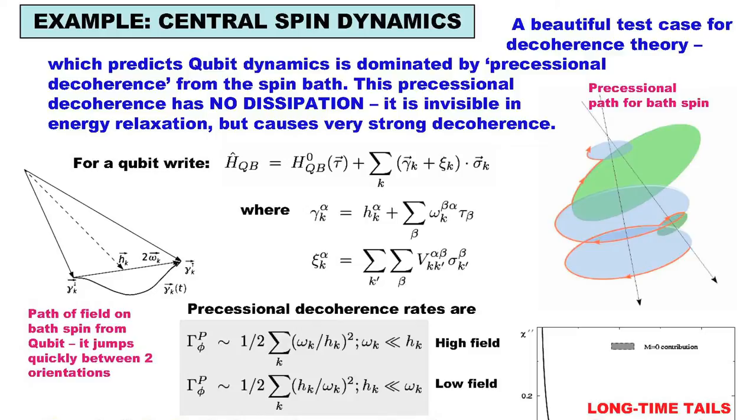Let's imagine we're looking at one of these spins in the bath, and let's couple it to some central system like a qubit which is flipping back and forth. What does the bath spin do? Well, every time the qubit flips, the field on the bath spin changes. And as time goes on, the field on the bath spin is jerking back and forth between two orientations — this one and this one.